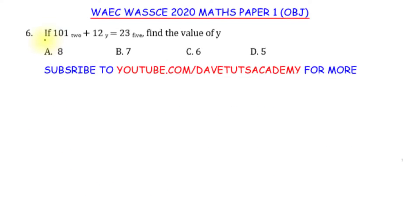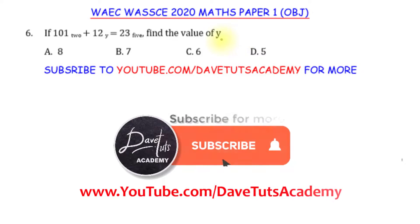Here in this question, we are asked that if 101 to base 2 plus 12 to base y is equal to 23 to base 5, we have to find the value of y.